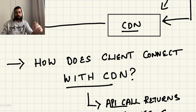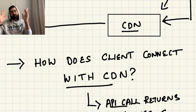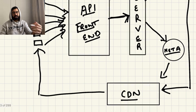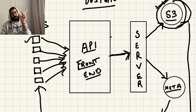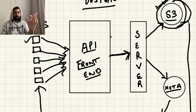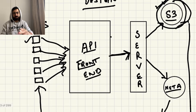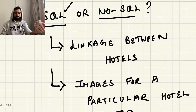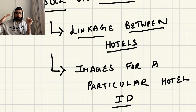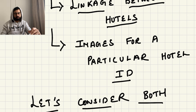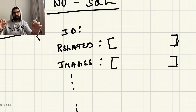How does the client connect with the CDN? When someone uploads an image, it's stored in S3. The client makes an API call, which returns an image link — but that link is not the actual S3 link; it's a link to the CDN. If the image isn't cached on CDN yet, the CDN makes a call to S3 and fetches the image using its ID. In the metadata store, we store the CDN link even if it doesn't yet exist, so once requested it gets cached there.